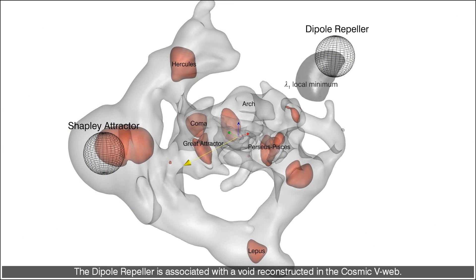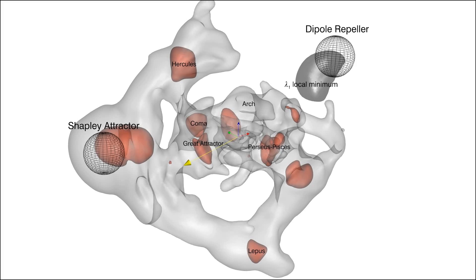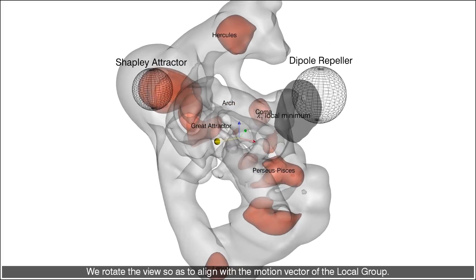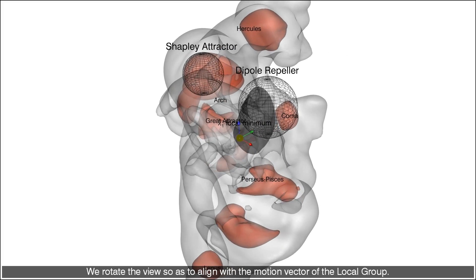The dipole repeller is associated with a void reconstructed in the cosmic V-web. We rotate the view so as to align with the motion vector of the local group. This motion is aligned with the region of the dipole repeller.